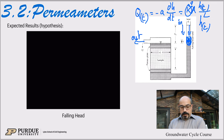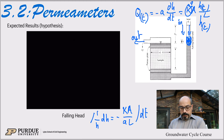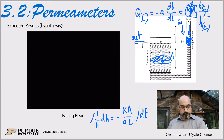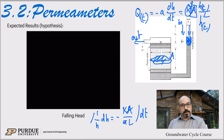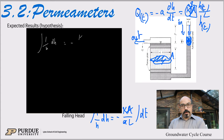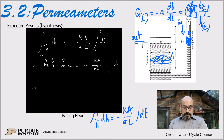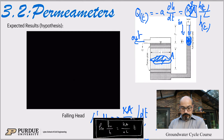Separating variables, we get (1/H) dH equals minus K·a over L·dt. Note that big A here is the area of the sand column — assuming those two areas are different you have to account for that; if they're the same it simplifies. Integrating both sides, the integral of 1/H is a natural log of H, so we get ln(H) minus ln(H₀) equals minus K/L times t.